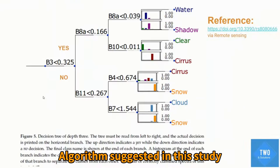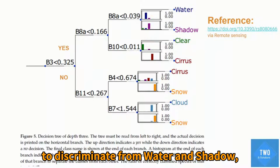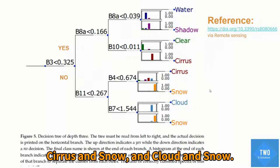The algorithm suggested in this study uses a decision tree of depth-3 to discriminate between water and shadow, clear surface, surface and snow, and cloud and snow.